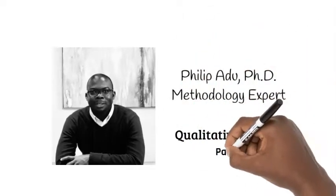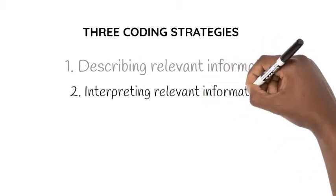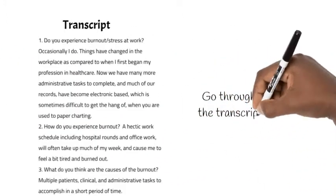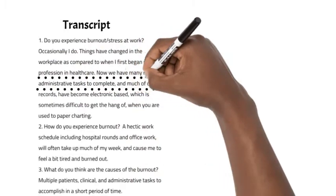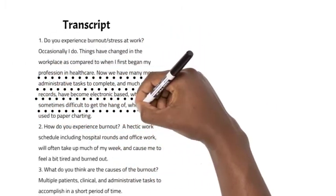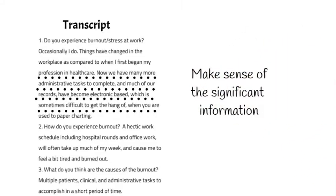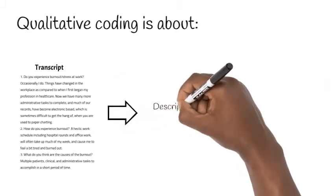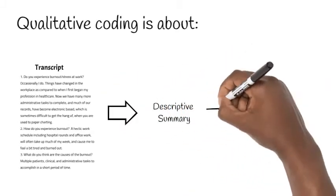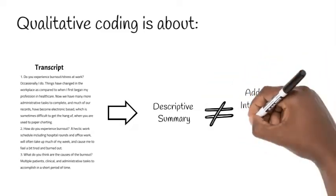The second option or strategy is the interpretation strategy. This is where you go through the transcript. You have to first understand what participants are telling you and then identify significant information. You try to make sense of the significant information because directly describing what the participant has given you will not address the real research question that you have.